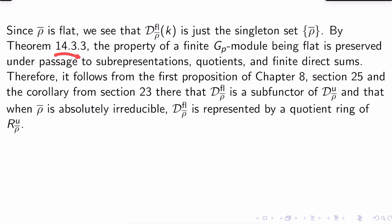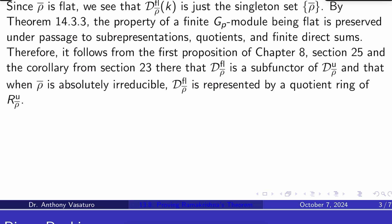By theorem 14.3.3 from a previous video, the property of a finite G_p-module being flat is preserved under passage to subrepresentations, quotients, and finite direct sums. What that means is that it follows from the first proposition of chapter 8, section 25, and the corollary from section 23 that D^fl_ρ̄ is a subfunctor of D^u_ρ̄, and that when ρ̄ is absolutely irreducible, D^fl_ρ̄ is represented by a quotient ring of R^u_ρ̄. That's kind of what we wanted to prove, right?